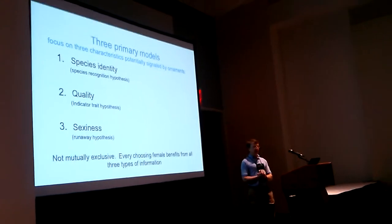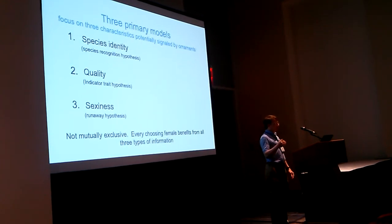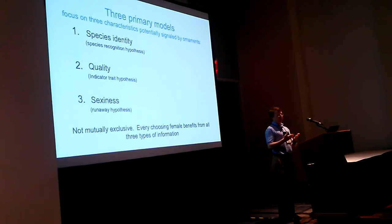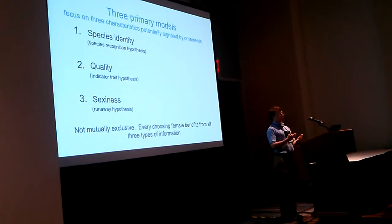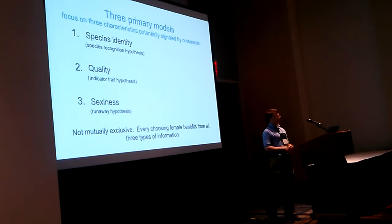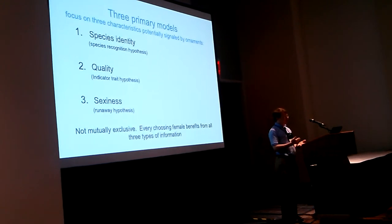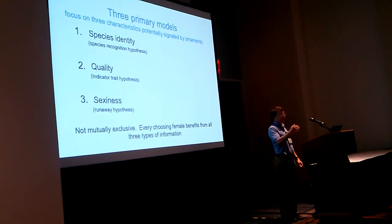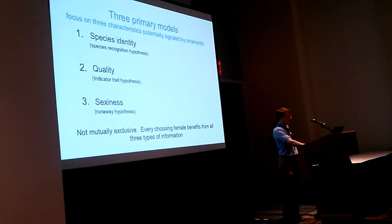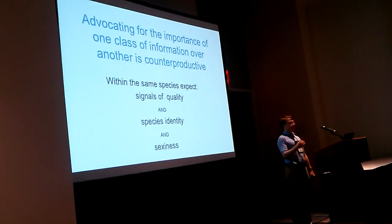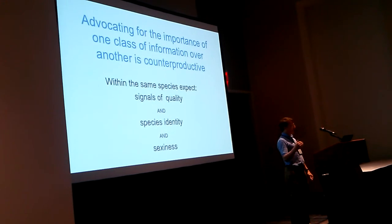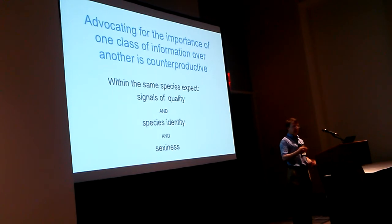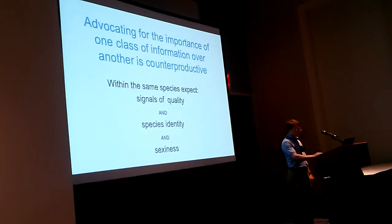One underappreciated aspect of these models is that each focuses on a different class of information that females assess when choosing. The species recognition hypothesis focuses on signals of species identity, the indicator model on signals of condition or quality, and the runaway hypothesis on signals of aesthetic beauty. These are not mutually exclusive classes of information, so they're not necessarily mutually exclusive models. Every choosing female potentially benefits by assessing each of these different classes of information. Advocating for one class over another is really counterproductive.